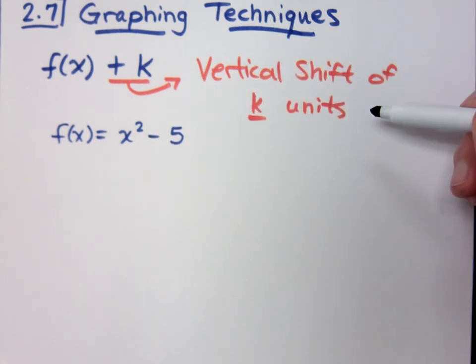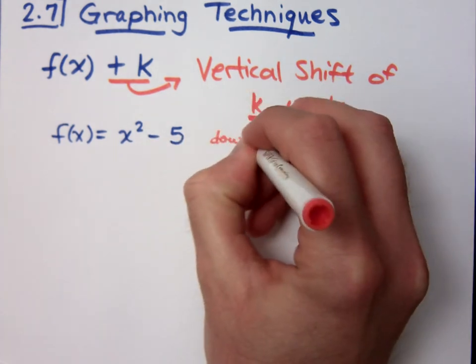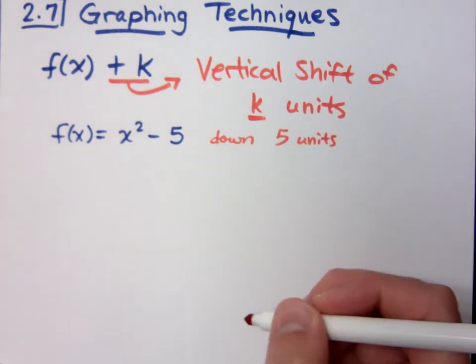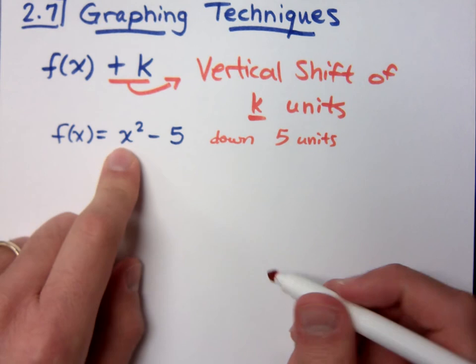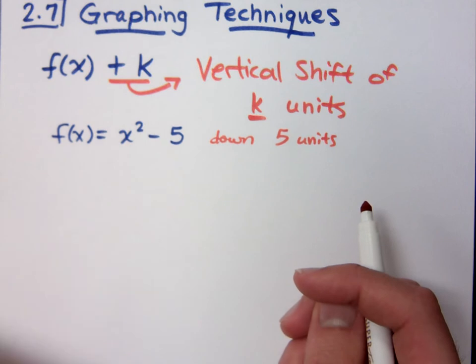So this minus 5, according to what I wrote up here, means you're going to be doing what? Going down 5 units. That means you're going to be going down 5 units from whatever your basic shape was. This x squared tells us that it's going to be a parabola, that u-shaped guy.